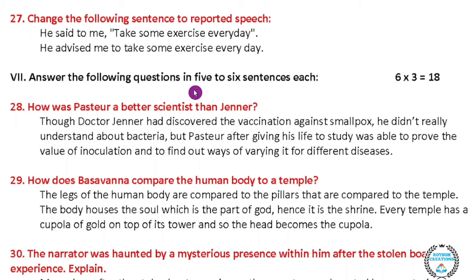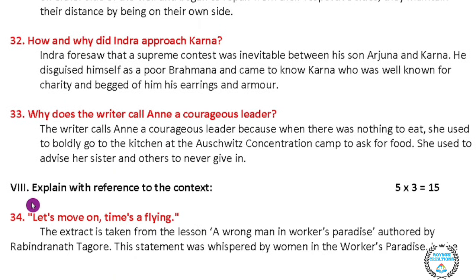Main number seven: answer the following questions in five to six sentences each. There are six questions and each question carries three marks, so eighteen marks totally. Main number eight: explain with reference to the context. There are five questions and each question carries three marks, totalling fifteen marks.